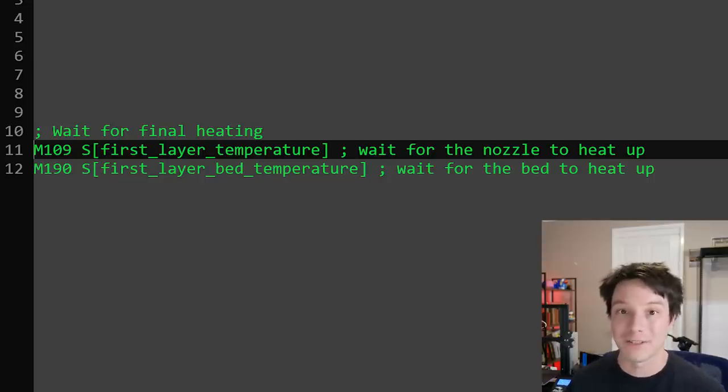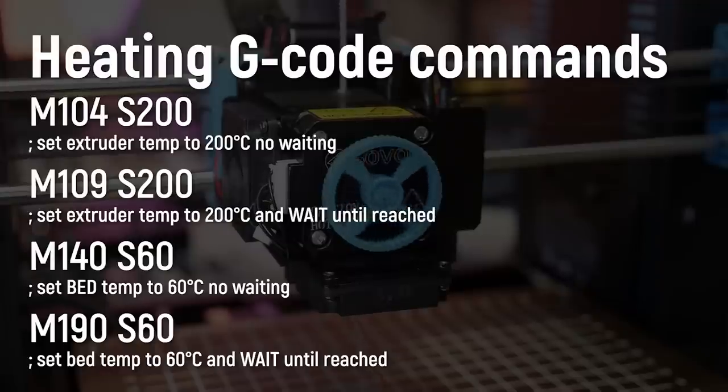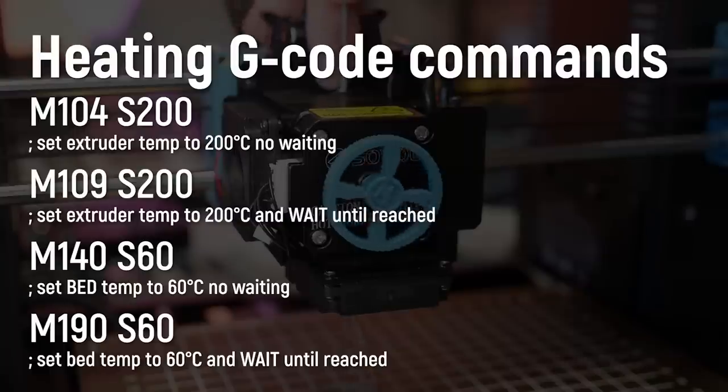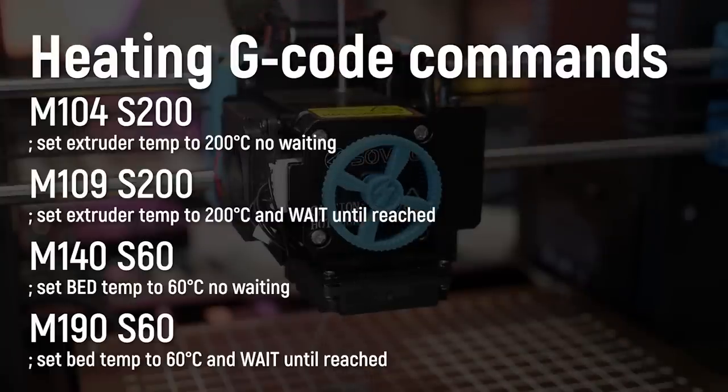Beds have their own versions of these commands: M140 and M190. M140 will start heating to a temperature but not wait, while M190 will wait until it hits that temperature. When printing materials like ABS, you need the print bed to be at temperature before the first layer — otherwise it's probably going to warp and fail. That's why in your start G-Code you might want to use M190. Most slicers handle this now, but it's important to have this knowledge to diagnose and customize your start and end G-Code scripts.